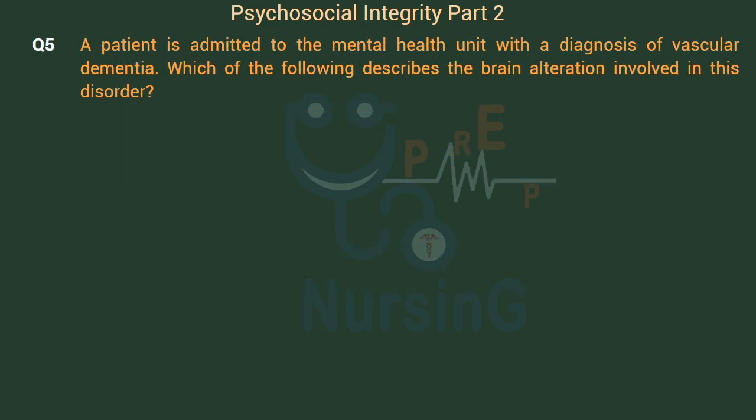A patient is admitted to the mental health unit with a diagnosis of vascular dementia. Which of the following describes the brain alteration involved in this disorder?